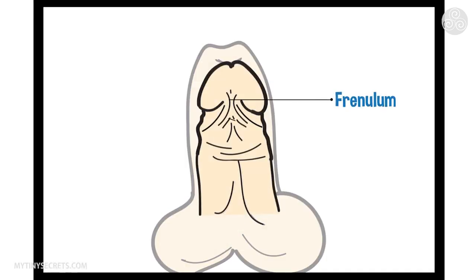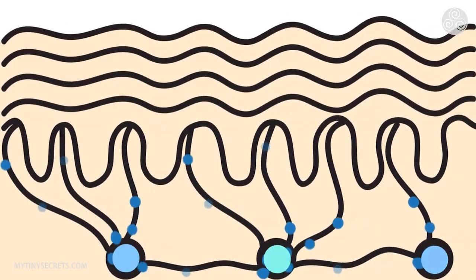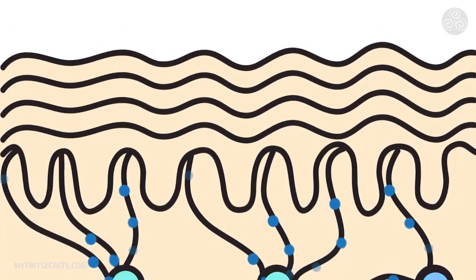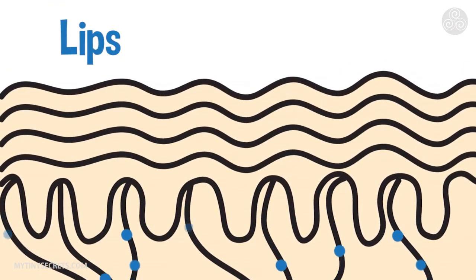The foreskin contains several very special structures that increase sexual pleasure, such as the frenulum and rigid band. Both are removed in circumcision. The rigid band, for example, contains so-called fine touch receptors. You have the same kind of nerve also in the lips and fingertips.